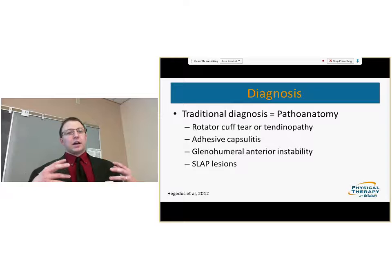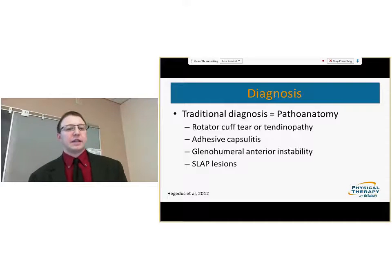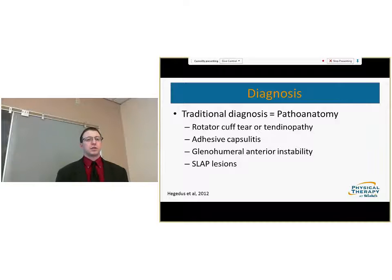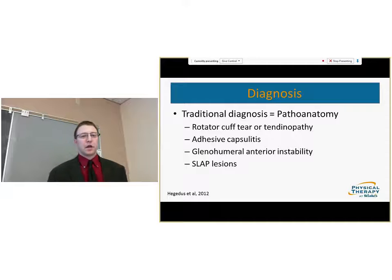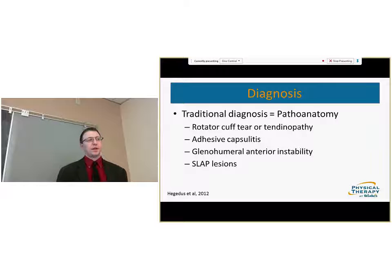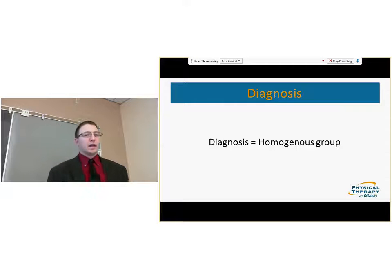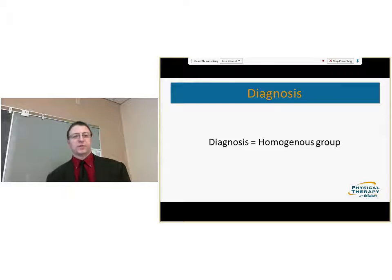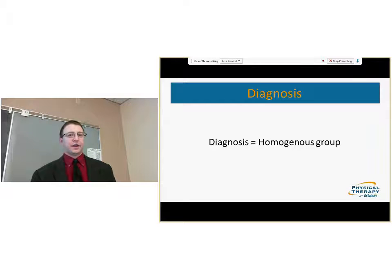Traditional diagnosis is based upon the pathoanatomic medical model, which is aimed at identifying pathologic tissues. A lot of work has been published regarding diagnostic accuracy based upon these pathoanatomic diagnoses, using tests to identify rotator cuff tendinopathy, adhesive capsulitis, glenohumeral anterior instability, SLAP lesions, and numerous others. Implicit in this model is that patients with the same pathology should be managed in essentially the same way, have similar prognoses, and that the diagnosis remains static over the episode of care.